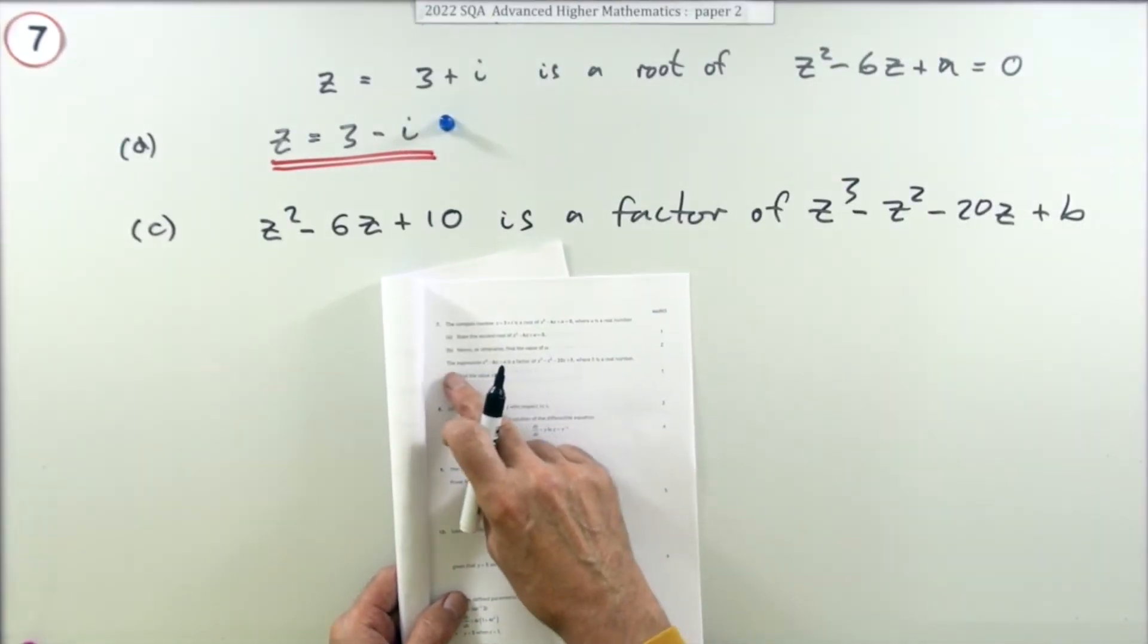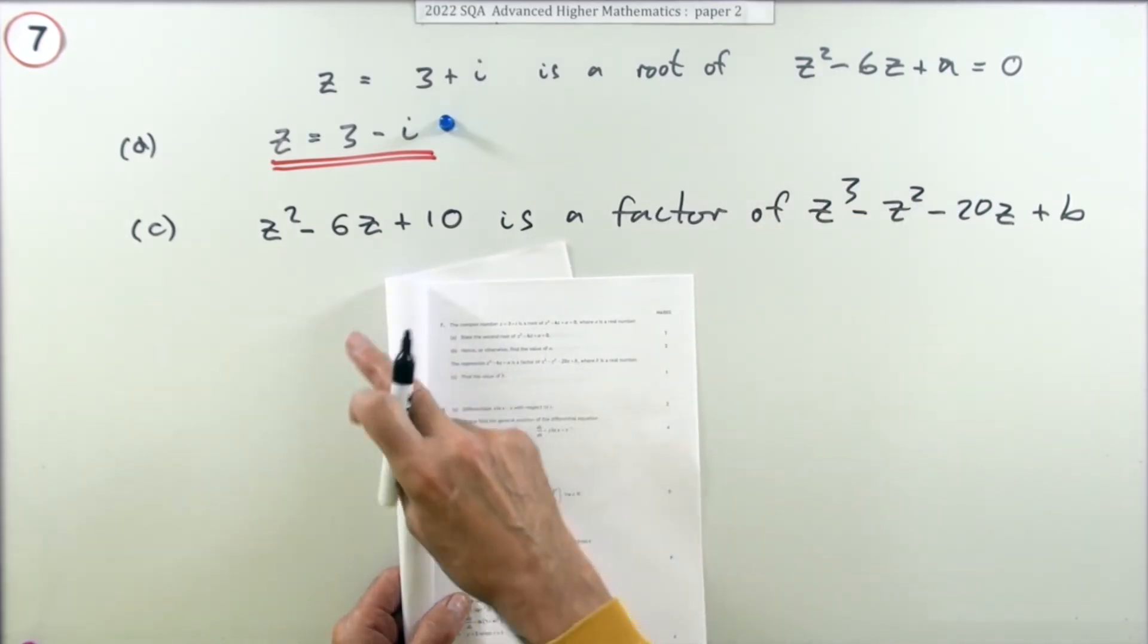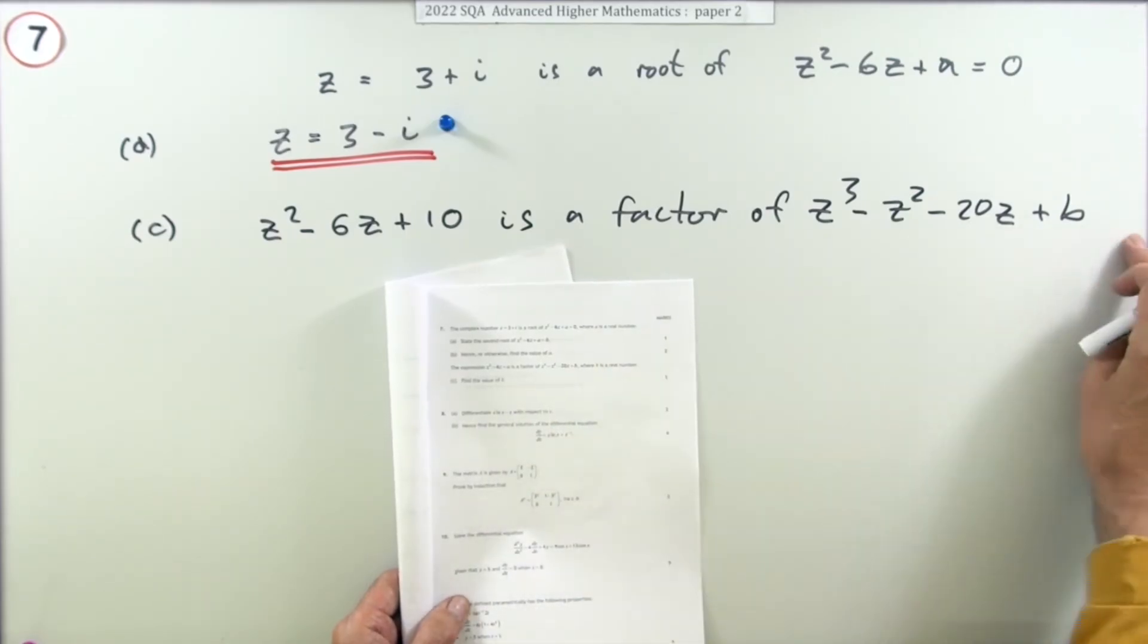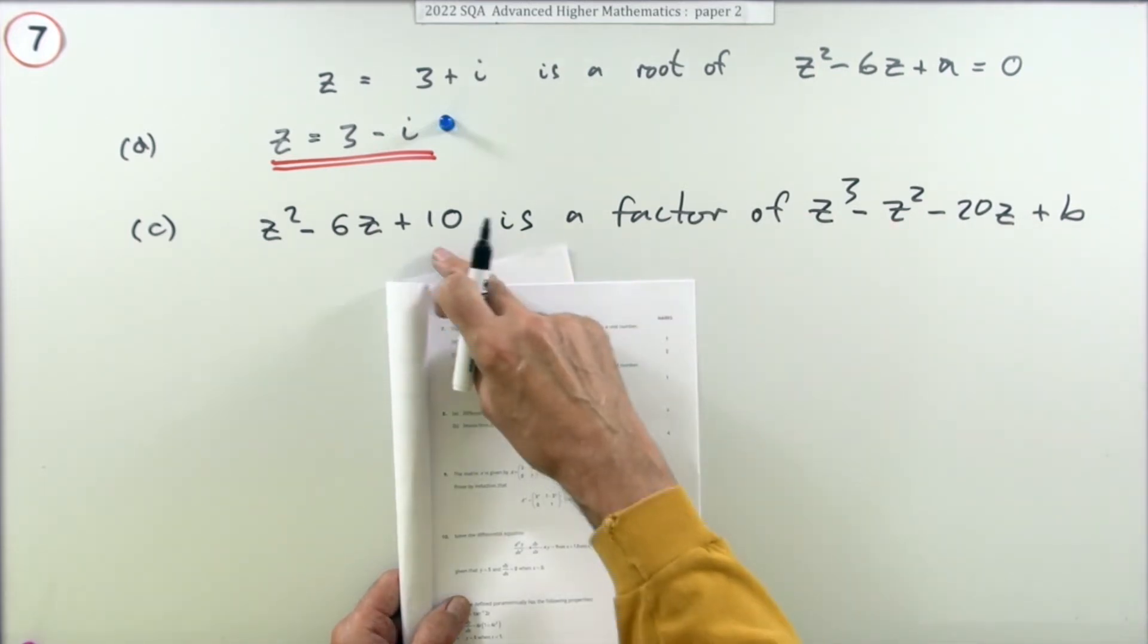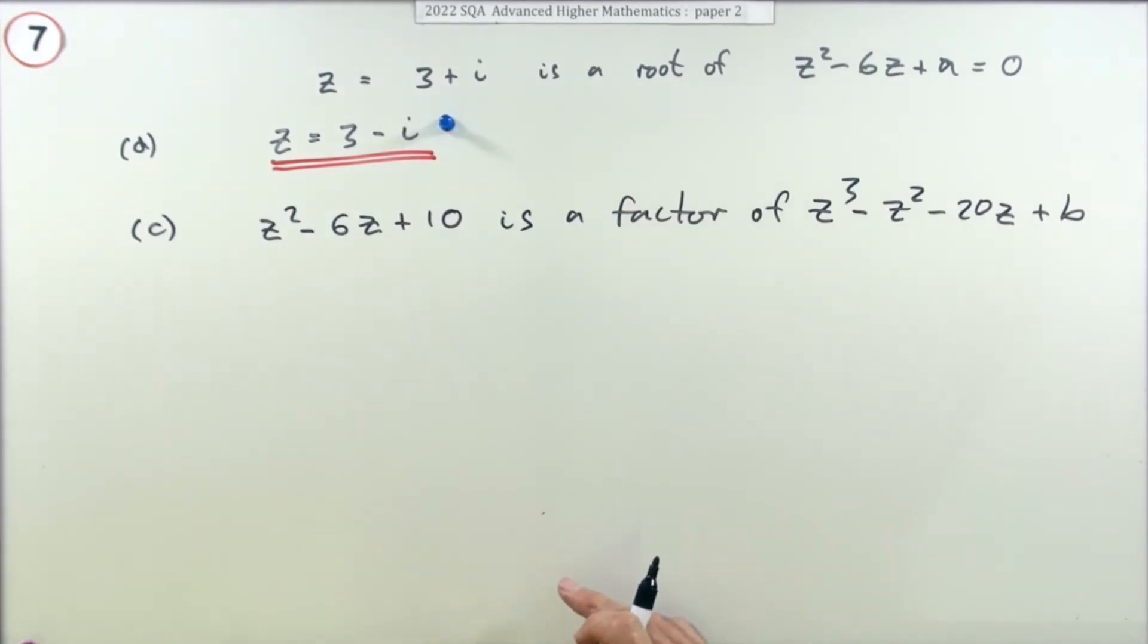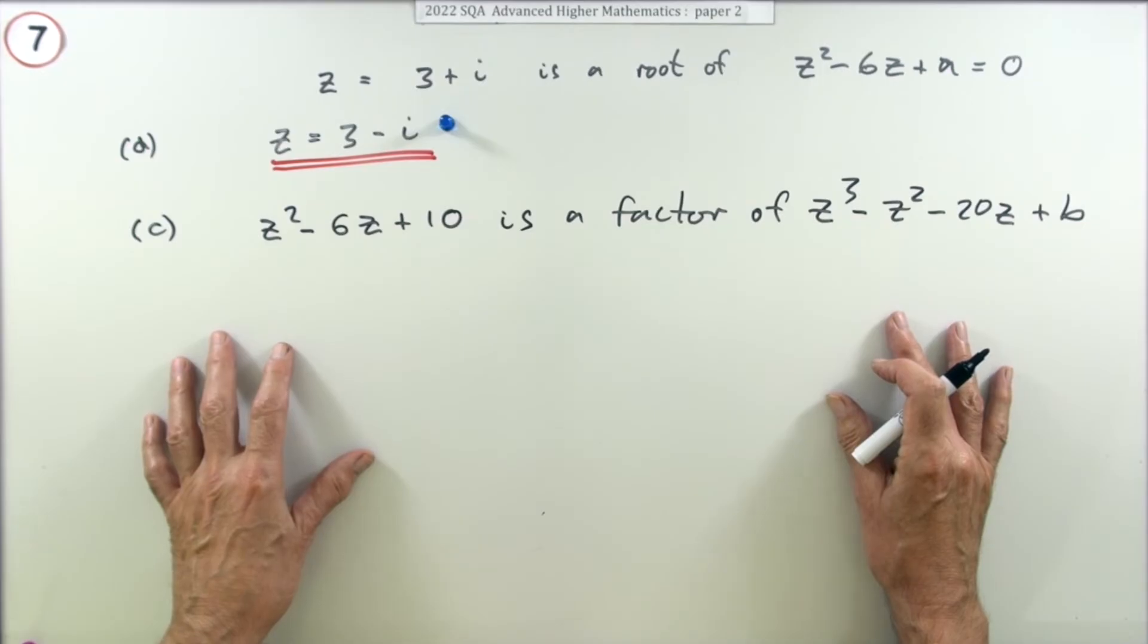Now part c. The expression that you had in part a and b, z squared minus 6z plus a, so I've just put the 10 in, is a factor of this cubic expression here with an unknown constant in it, and you have to find the value of b. Knowing that that's a factor, but it's only one mark, I can't think of a really quick way of getting that answer.